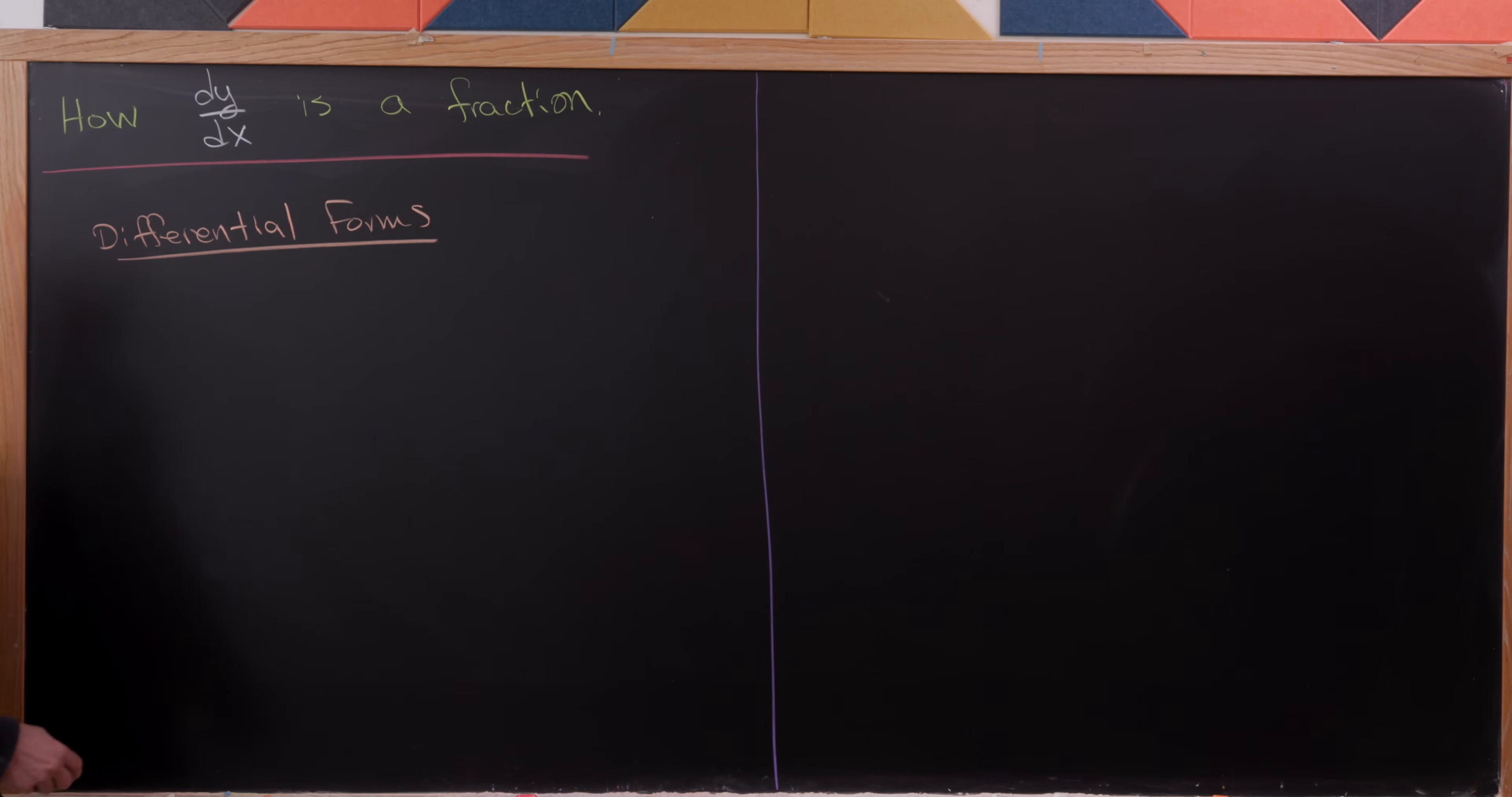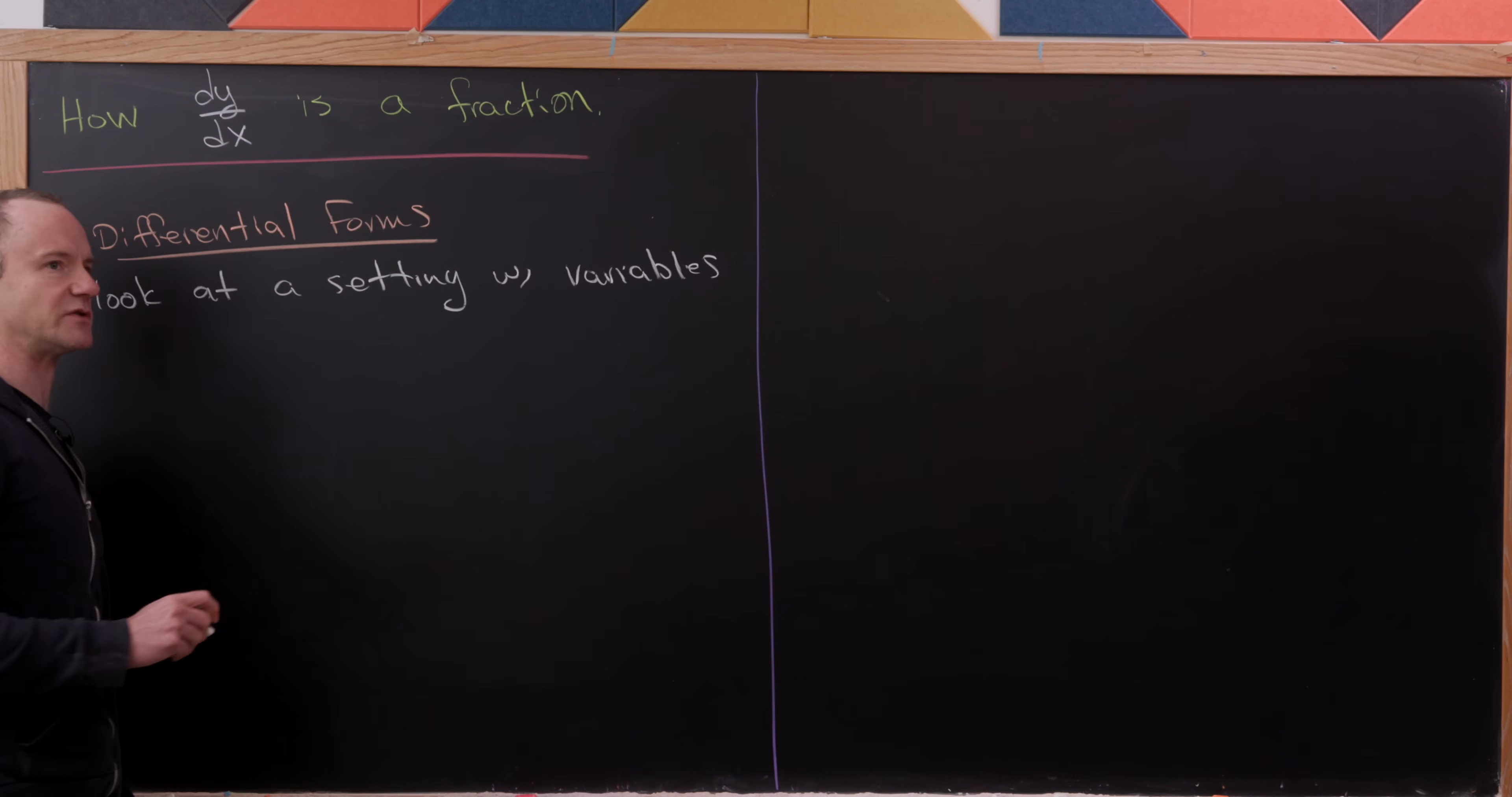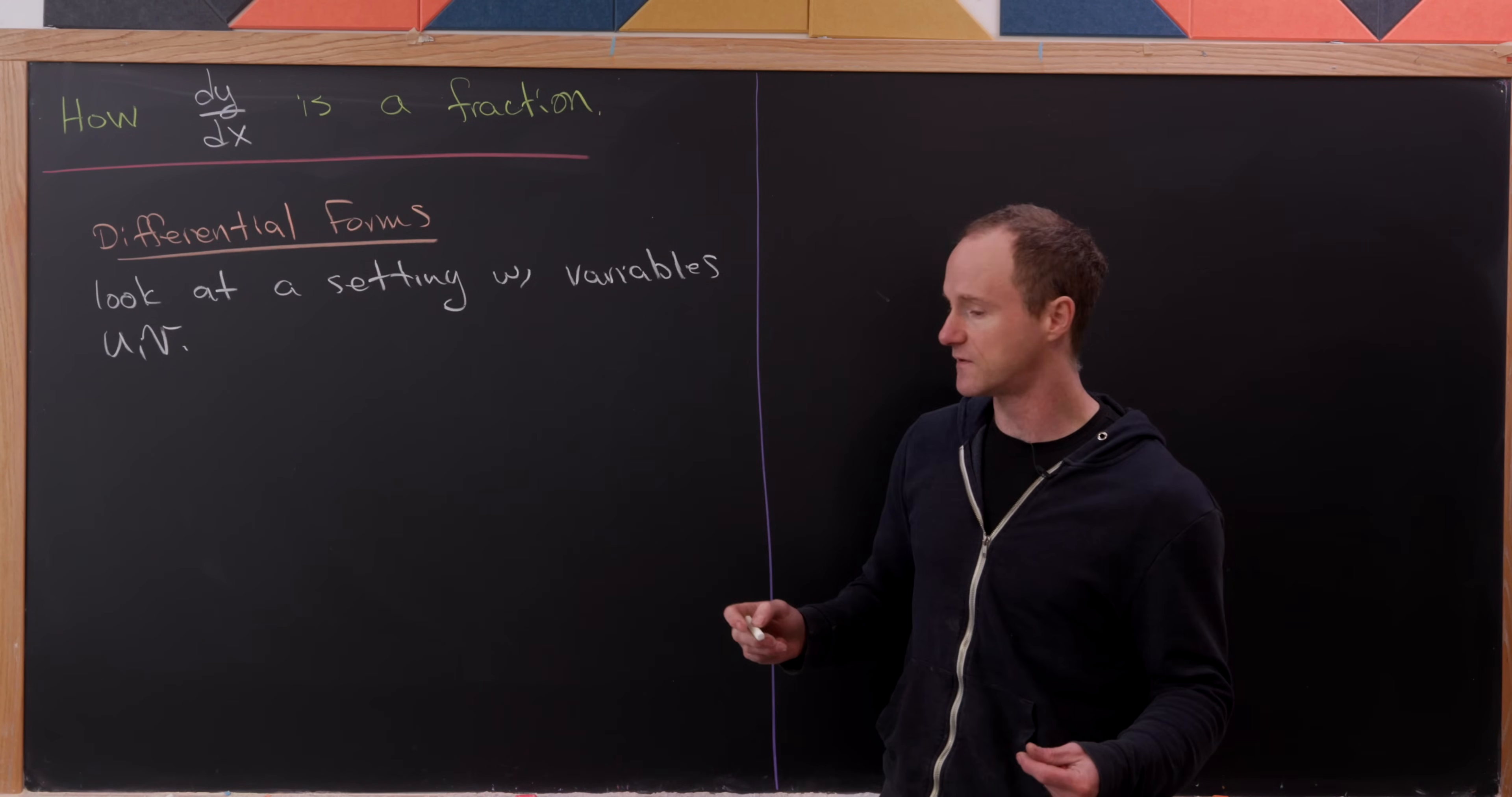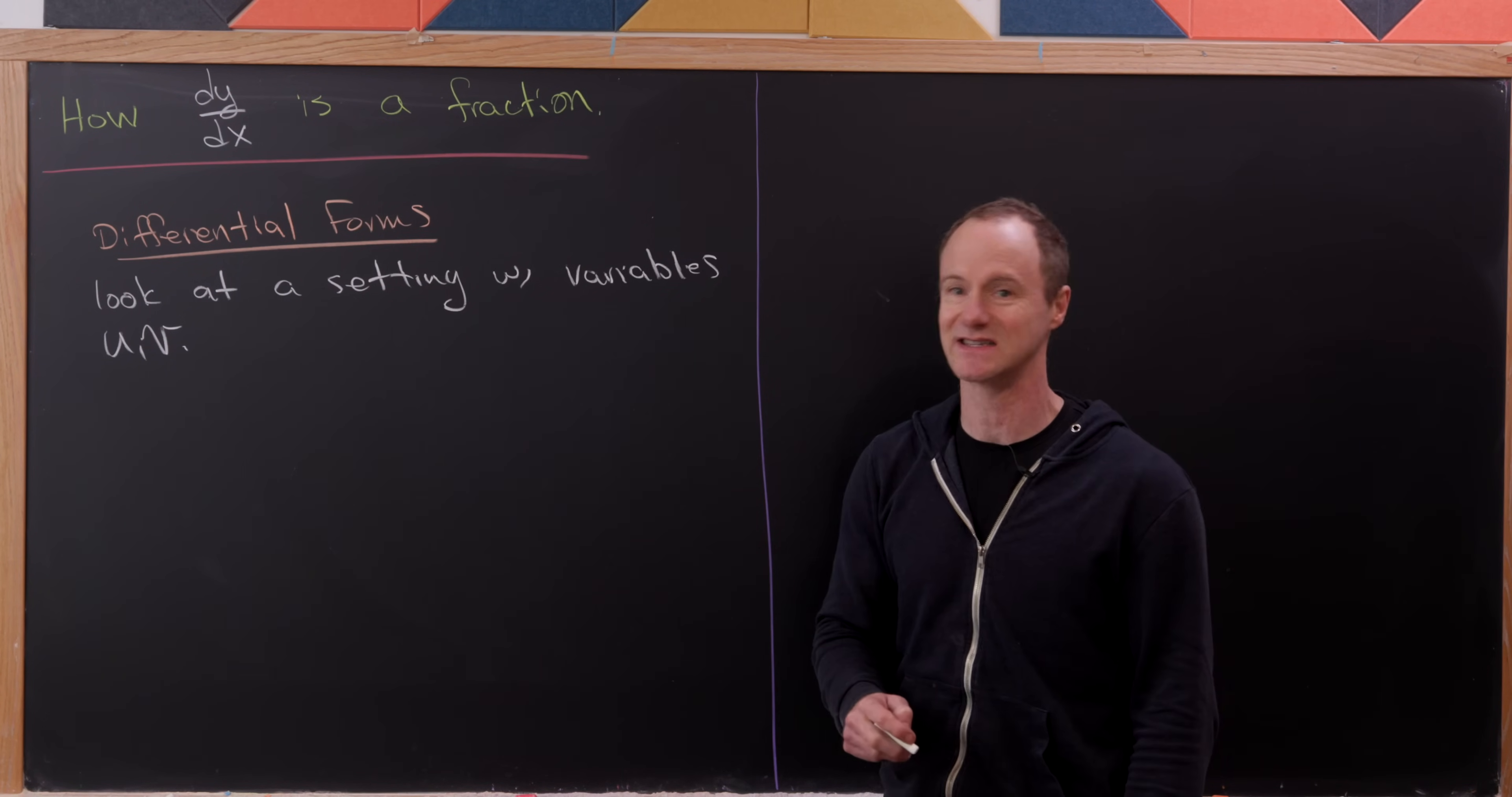So what we're going to do is look at a setting with two variables. And you can do this with any number of variables, one variable, two variables, n variables, if you will. But I would say doing it with two variables is maybe just enough to get an idea of what's going on here. If we stuck with one variable, we might miss out a little bit. Although we will look at the special case of one variable to maybe address this statement here.